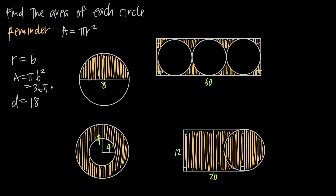If you're asked for a decimal answer or to round to the nearest tenths or hundredths place, you want to use an approximation for pi of 3.14. If you're asked for a fractional answer, use an approximation of 22 over 7 and multiply that by 36, leaving it as a fractional answer. But in this video, we're going to leave all of our answers in terms of pi, so the area would just be 36 pi.